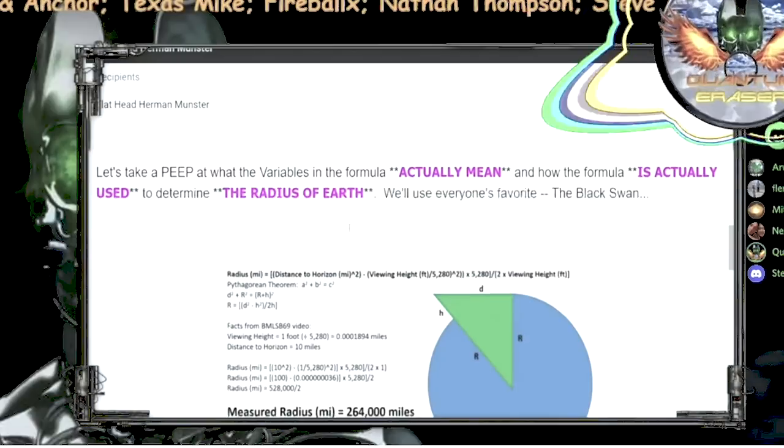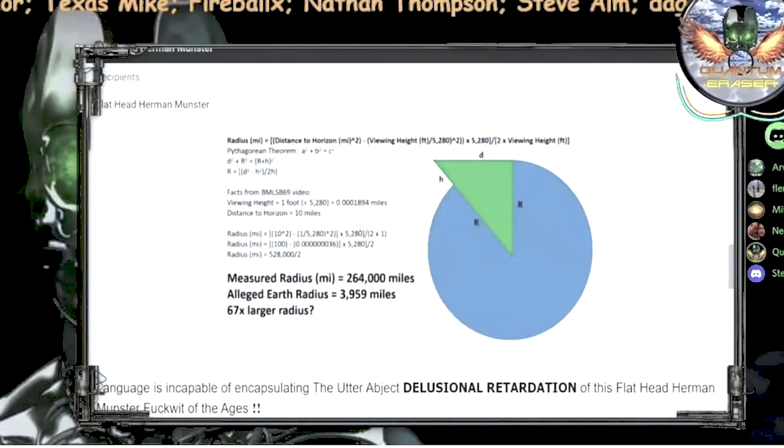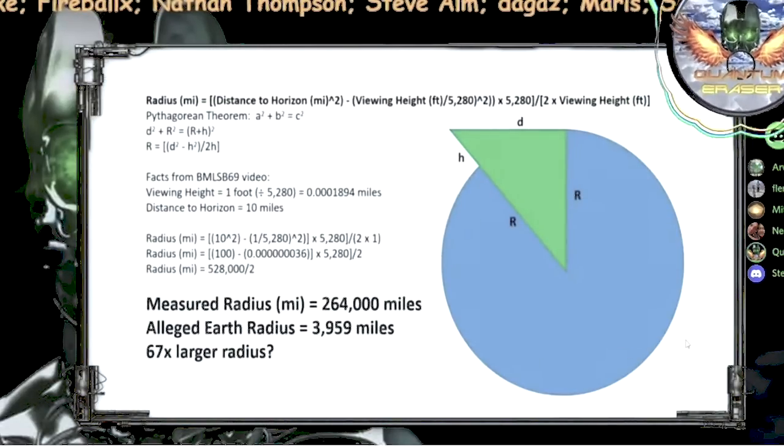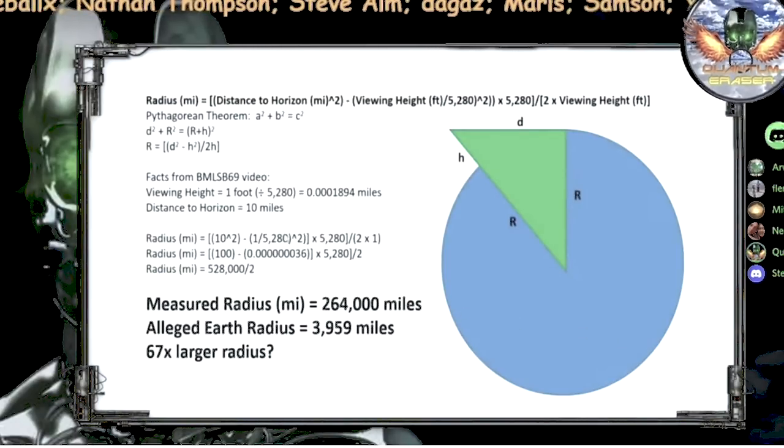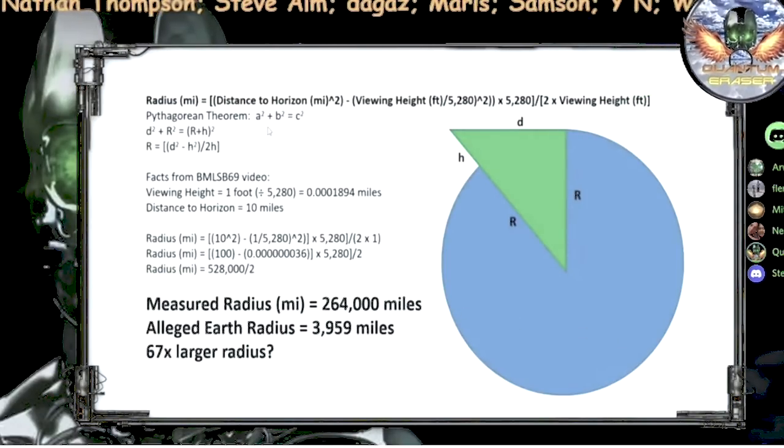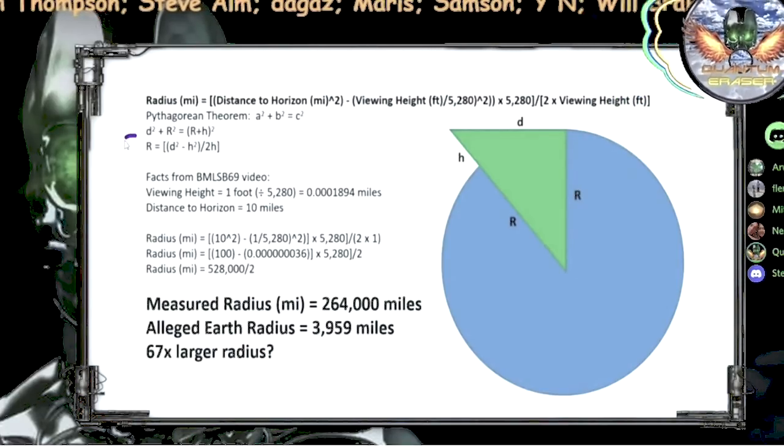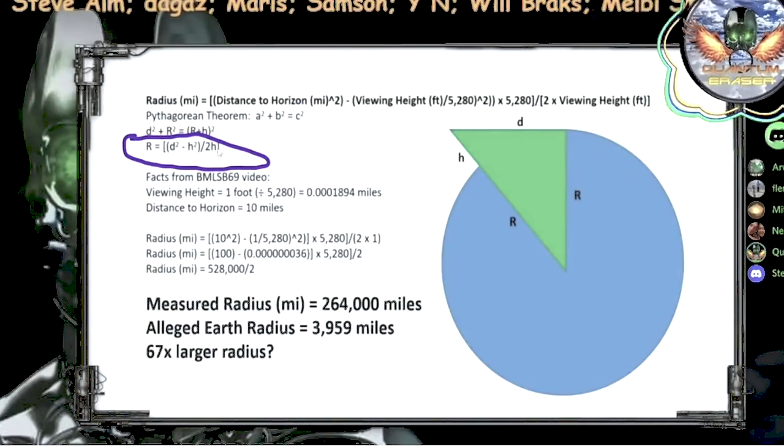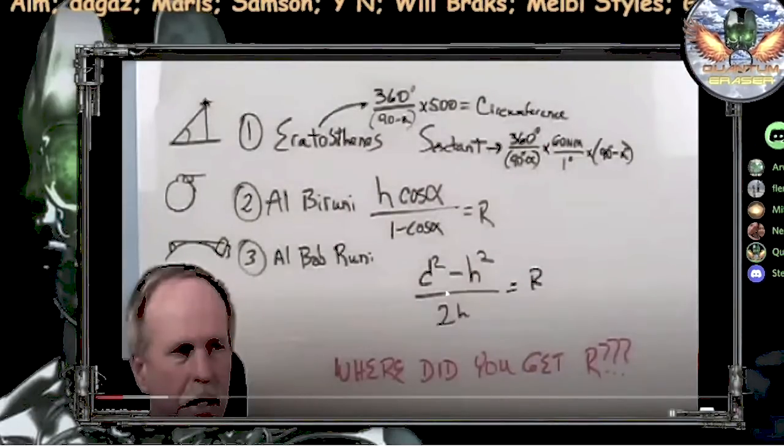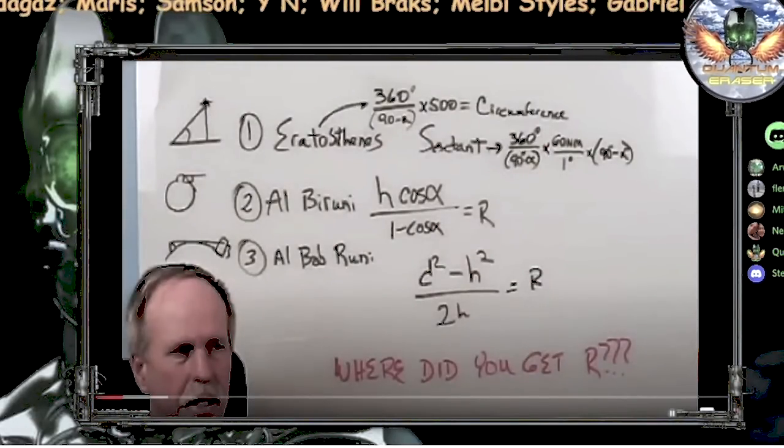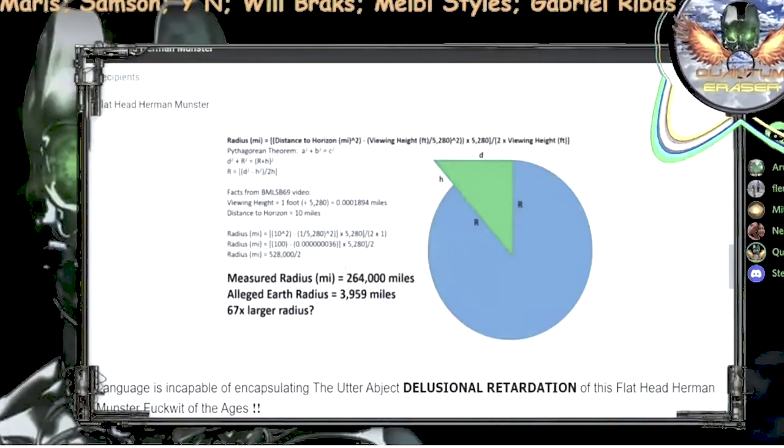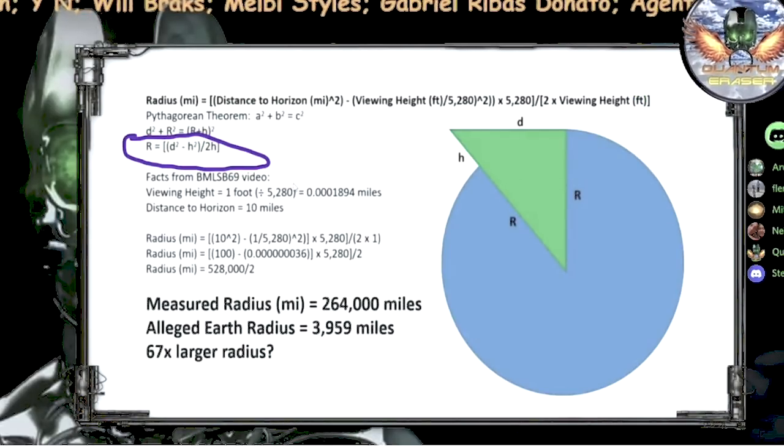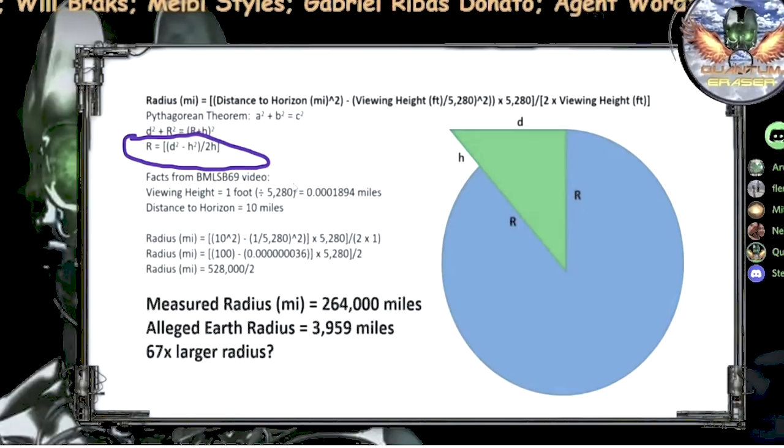Let's take a peep at what the variables in the formula actually mean and how the formula is actually used to determine the radius of the Earth. We'll use everyone's favorite, the black swan. Does everyone notice what this looks like? What is this? That's Bob's formula! Isn't it? There. Right there. That's Bob's formula. He just stole it from Pythagoras. He made it his own. Right? And he called it Al-Bob-A-Rooney.